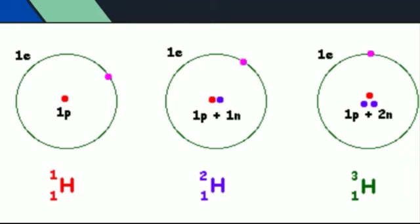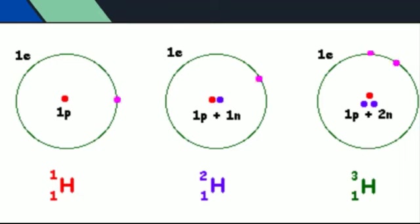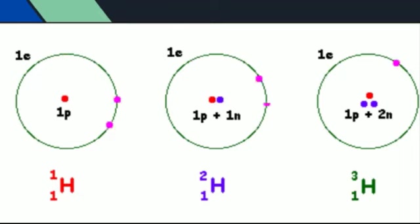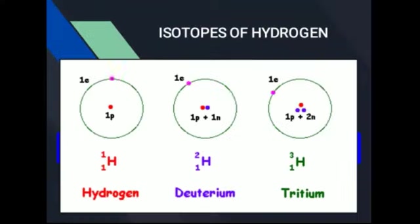¹H₁، ²H₁، ³H₁ — تینوں isotopes میں base میں لکھا 1 common نظر آ رہا ہے جو atomic number کو show کر رہا ہے یعنی number of electrons۔ یاد رکھیں: atomic number میں number of electrons ہمیشہ number of protons کے equal ہوگا۔ Superscript میں جو اوپر 1، 2، 3 لکھا ہے وہ atomic mass show کر رہا ہے — پہلے isotope میں کوئی neutron نہیں، دوسرے میں ایک neutron، تیسرے میں دو neutrons ہیں۔ امید ہے isotope کا concept clear ہو گیا ہوگا۔